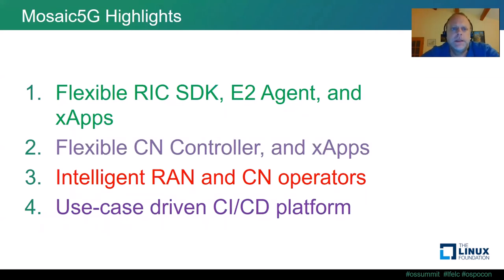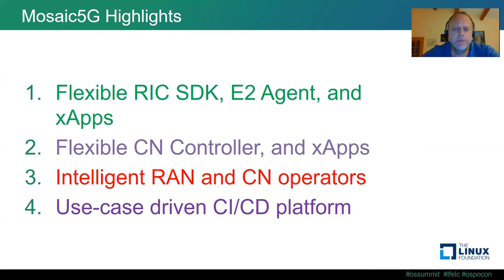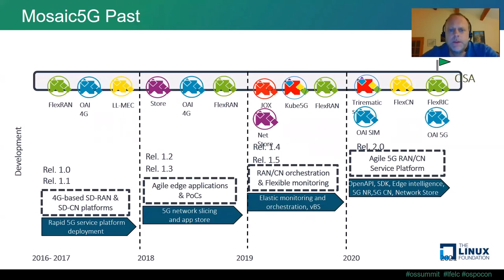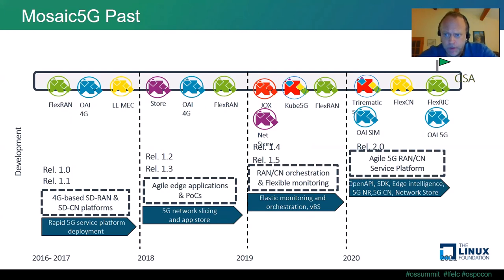The highlights coming from Mosaic 5G include a flexible RAN Intelligent Controller SDK with E2 agent and xApps in the ORAN sense, a flexible core network controller and associated xApps, intelligent RAN and core network operators, and use-case-driven CI-CD for this component combined with Open Air Interface and potentially other RAN platforms. Mosaic 5G came from its own standalone project and where it is today — fully integrated with Open Air Interface — is providing an agile 5G RAN and core network service platform on top of OAI.